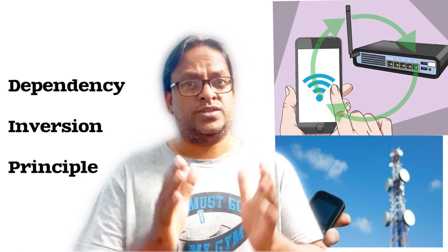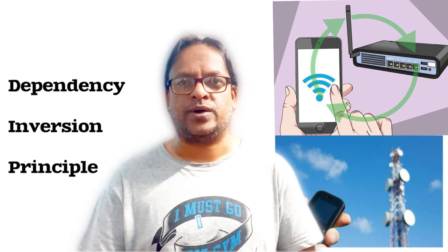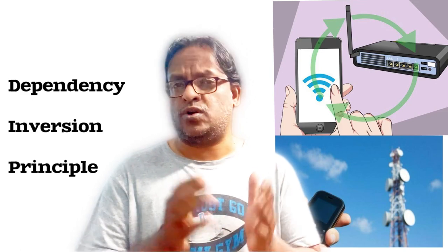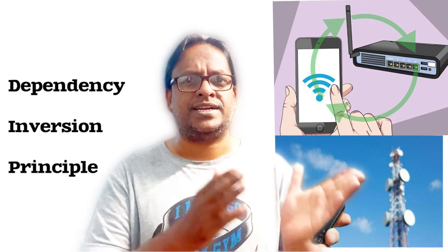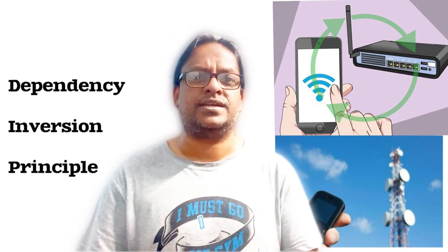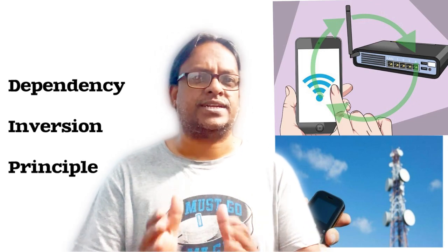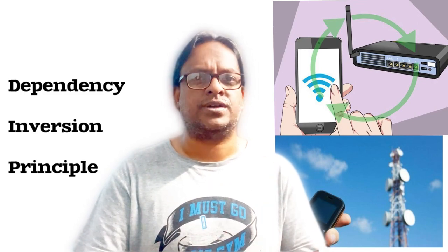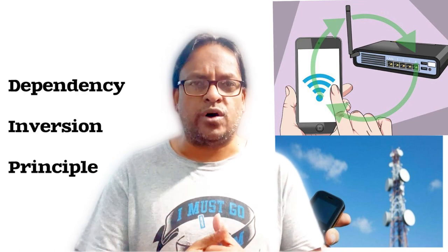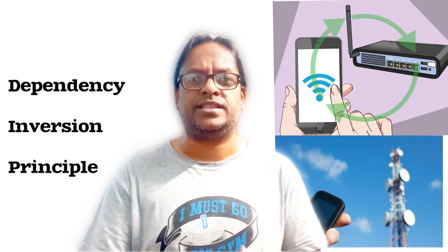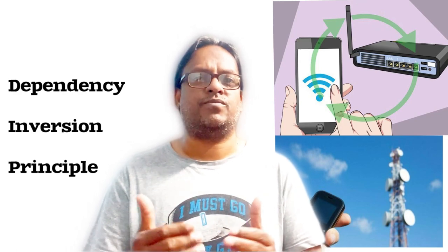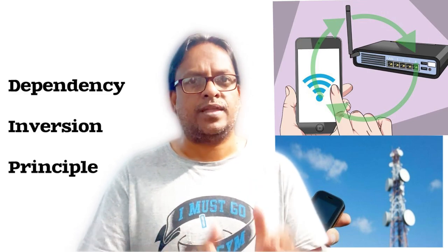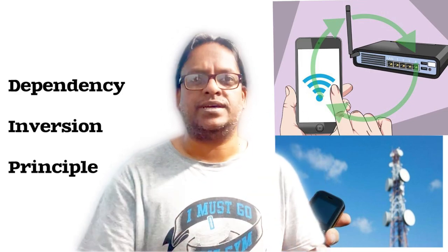The next letter in SOLID is D — D means Dependency Inversion Principle. This is a very important principle in programming. When using a news app on your phone, it should not matter whether you are connected to Wi-Fi or a mobile network — the app should function regardless of the type of internet connection. Similarly, our code should not be dependent on how we are connected to objects. Dependencies should be injected into the program as per the requirement, and it should work properly.